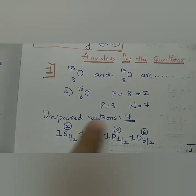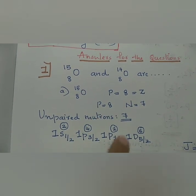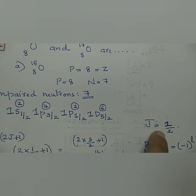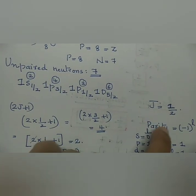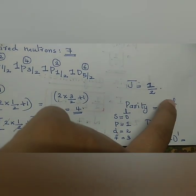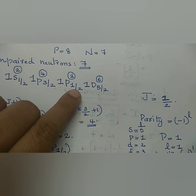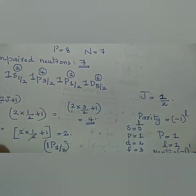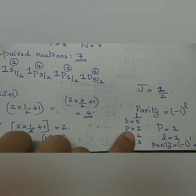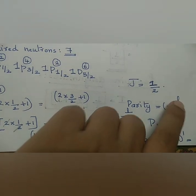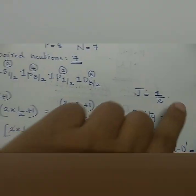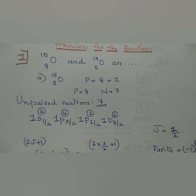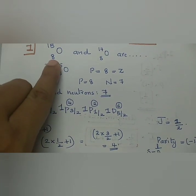So 7 nucleons are distributed as 2, 4, and 1 unpaired. The j value is 1/2. For parity: s is 0, p is 1, d is 2, f is 3. So minus 1 raised to 1 which is minus 1. Therefore, 1/2 minus is the spin parity of Oxygen-8-15 nucleus.